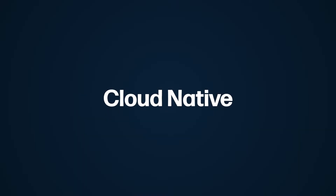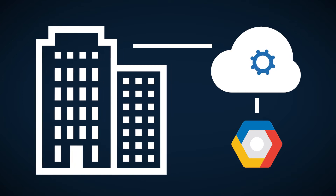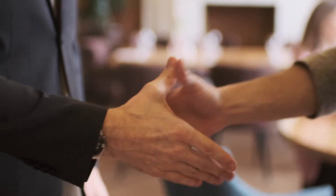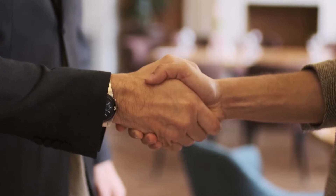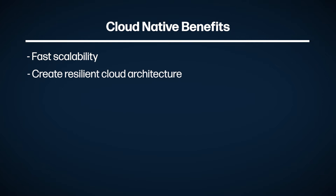First is the infamous cloud-native architecture. Being cloud-native means that your apps and workloads are built in such a way that takes advantage of one single cloud vendor's services. Essentially, being cloud-native allows companies to get the best advantage and best deals possible by showing their loyalty to that single cloud provider. Using a cloud-native architecture has benefits like faster scalability and ease of creating more resilient cloud architecture.